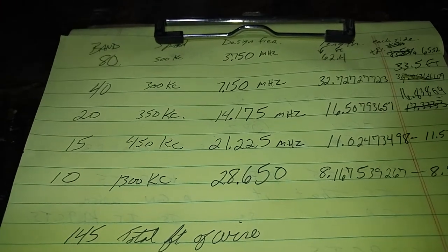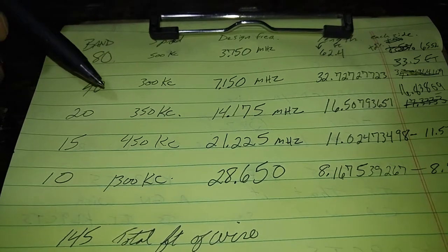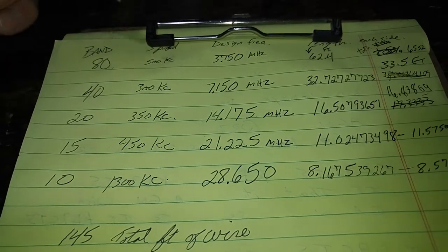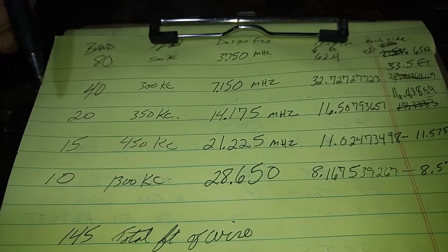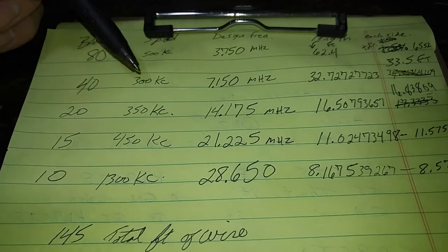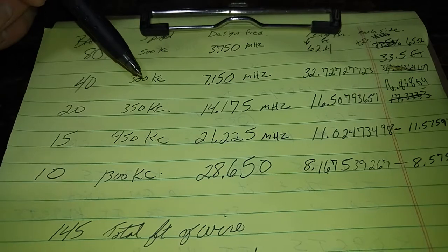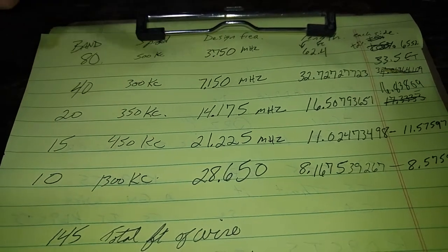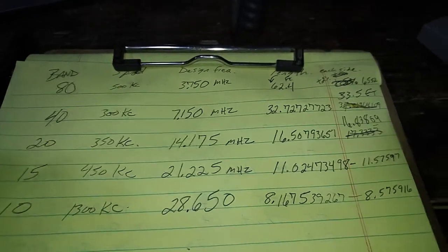So where do we start? Well, from the bottom of the 40 meter band to the top, there's 300 kilocycles. It's 300 kc wide. And I'm going to make the antenna, or the elements for the 40 meter portion of the antenna, I'm going to cut it for the middle of the band.